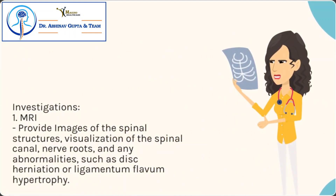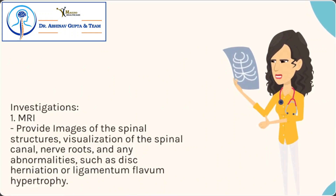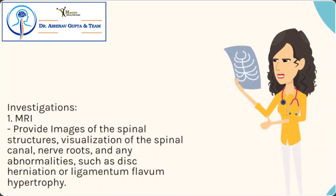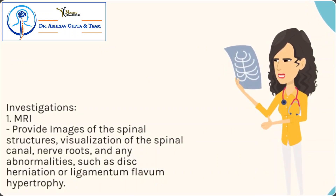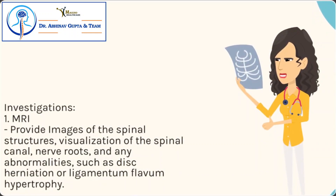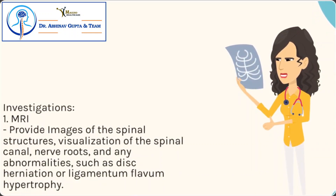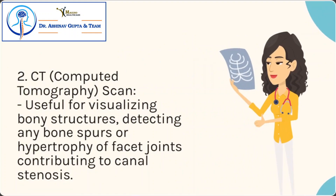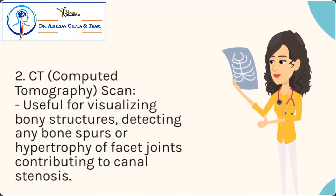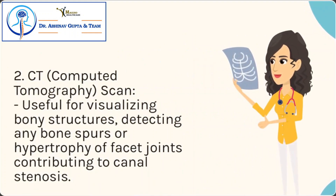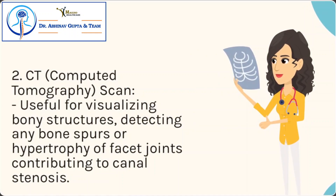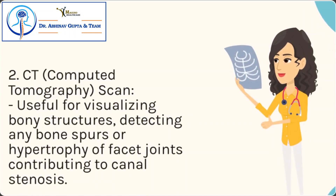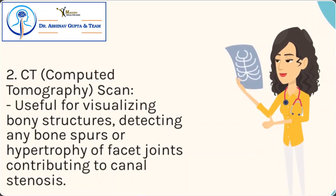Investigations: MRI provides images of the spinal structures — visualization of the spinal canal, nerve roots, and any abnormalities such as disc herniation or ligamentum flavum hypertrophy. CT (Computed Tomography) is useful for visualizing bony structures and detecting bone spurs or hypertrophy of facet joints contributing to canal stenosis.